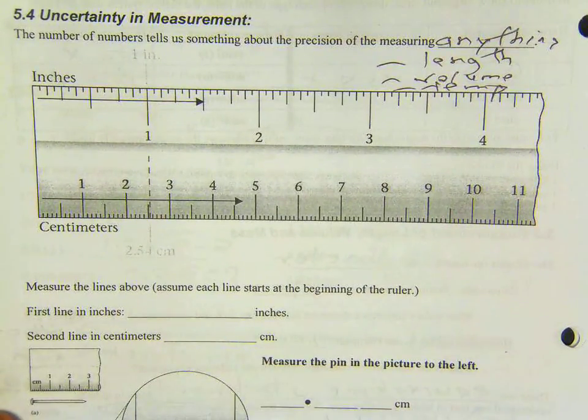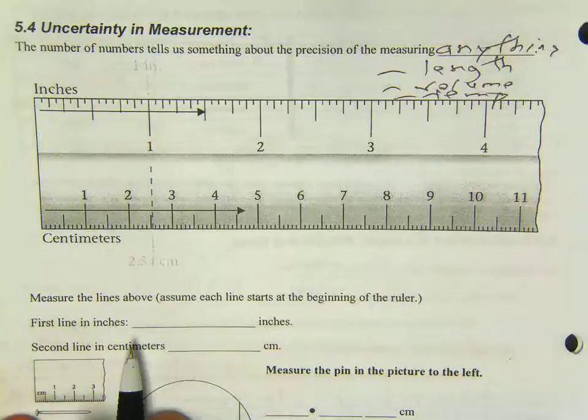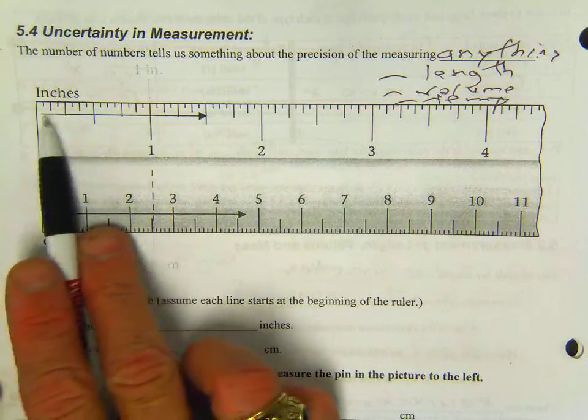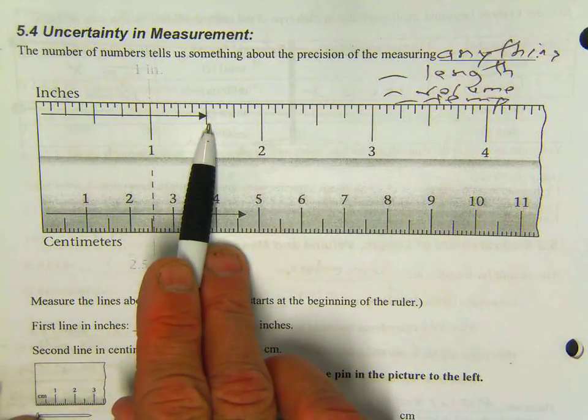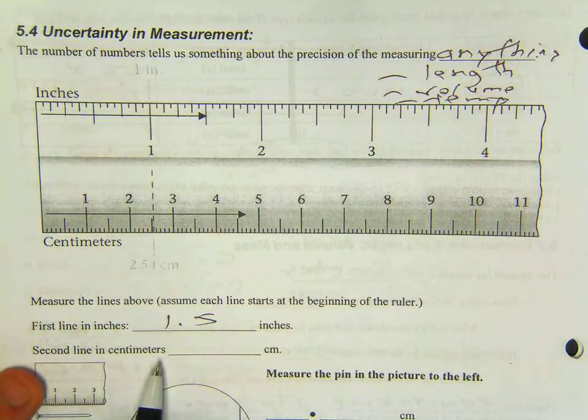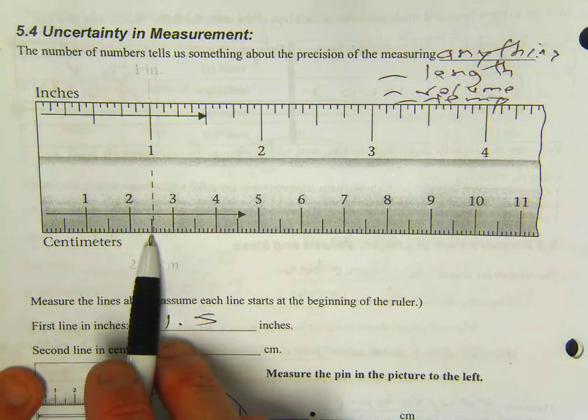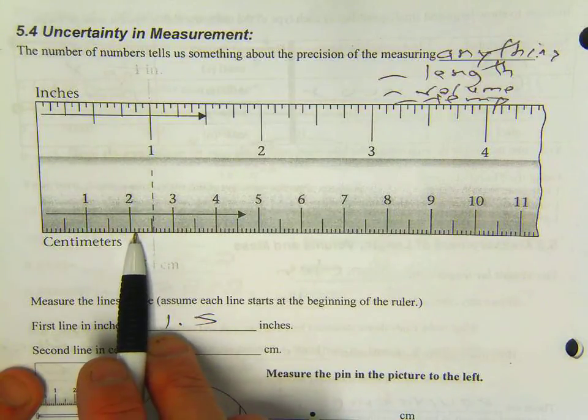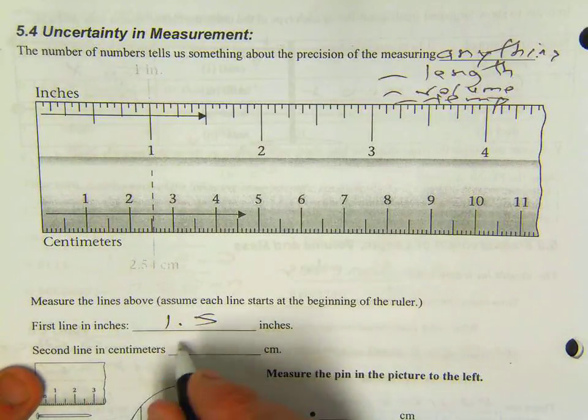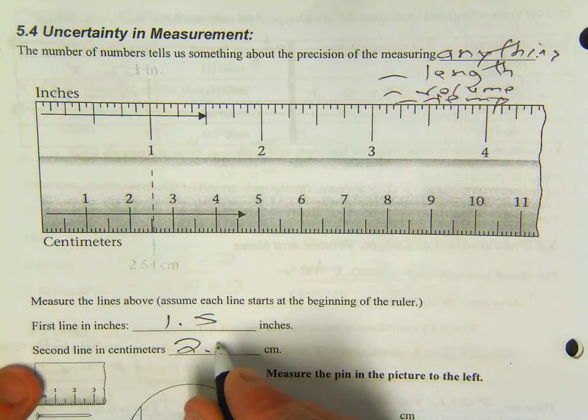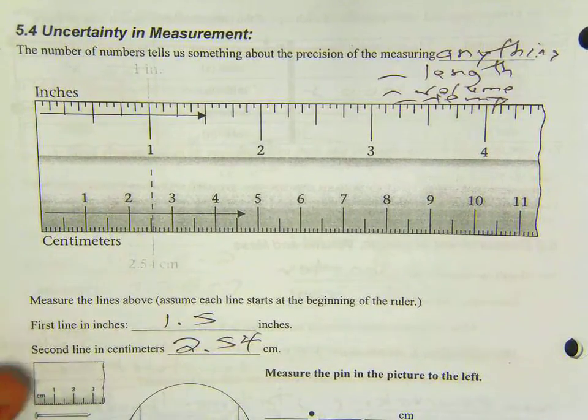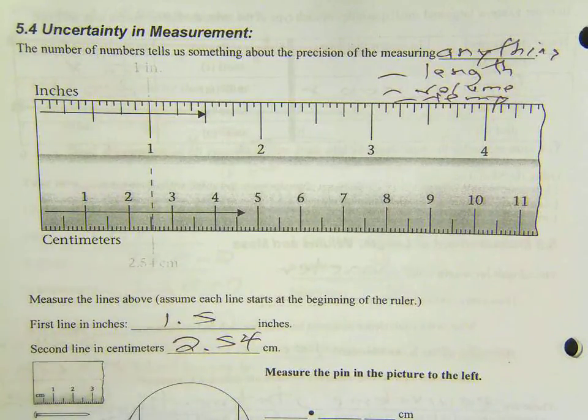If I look at these two rulers here, the first line in inches, if I looked at the first line in inches, this would be inches. So I would say this is 1.5 inches. The second line in centimeters would be equal to 2.5. Now notice 1, 2, 3, 4, 5. Each one of these is tenths, so I can actually record this as 2.54. Remember, I can go one extra decimal place as I do that.